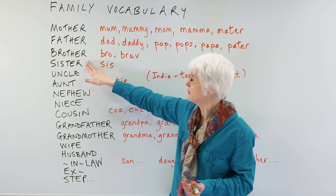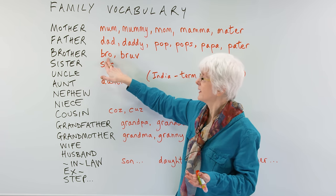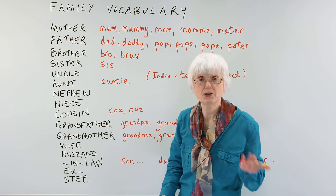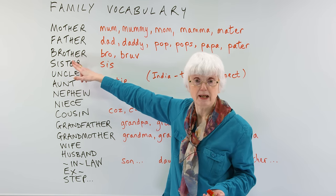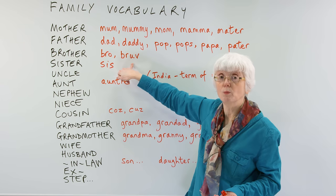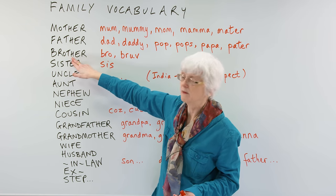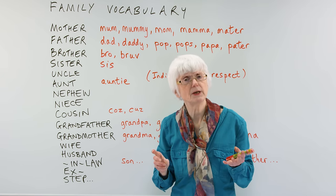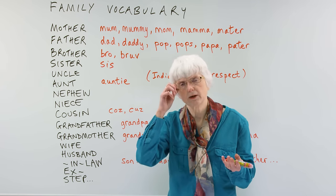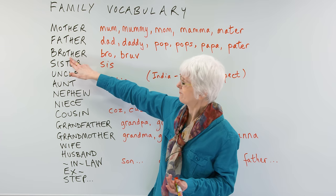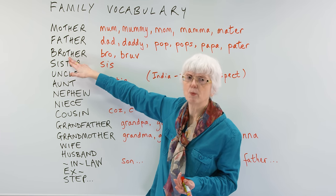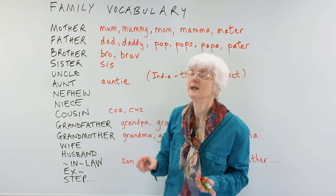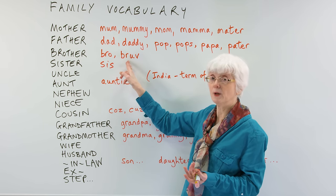Then we have brother. If you have a brother, they could be called in a very informal way bro — the first three letters of brother — or bruv. That comes from the London Cockney accent, where instead of pronouncing the T-H sound in 'brother,' they make a V sound instead, so it becomes bruv.